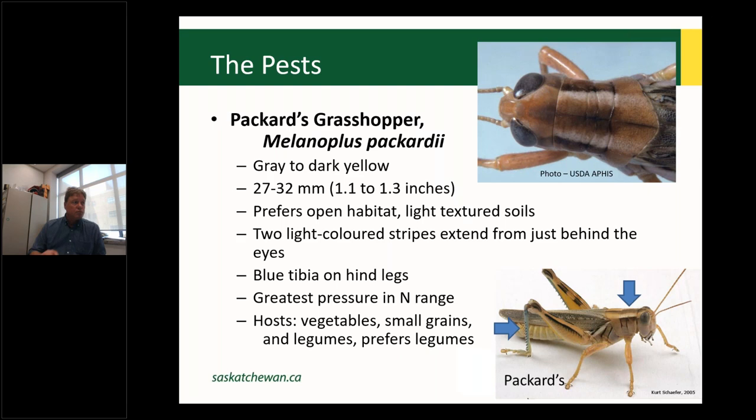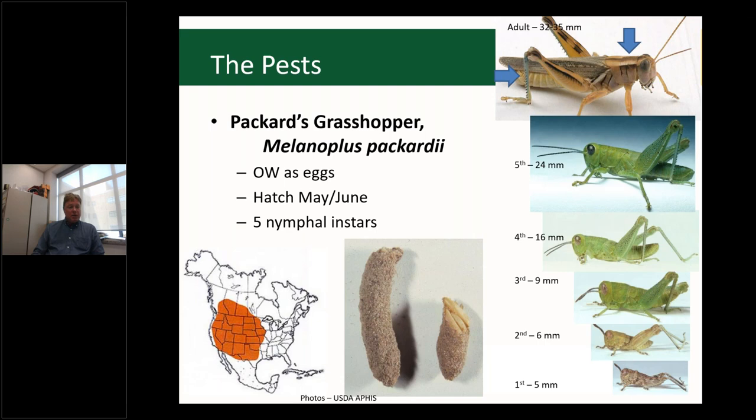Looking at Packard's nymphs, there's an overarching theme of green, with the exception of the neonates. Green nymphs with short antennae could be Packard's. We haven't seen big numbers of Packard's in the past couple of years, with the possible exception of some pockets near Saskatoon, but it's always one to keep an eye out for. These overwinter as eggs, hatching May to June with five nymphal instars.